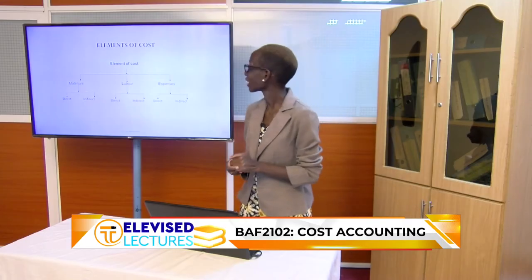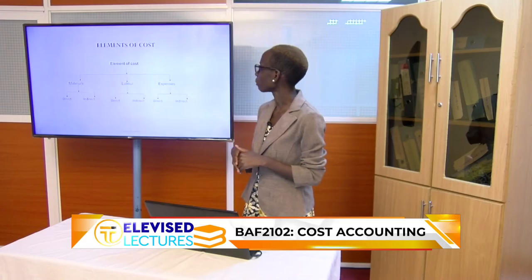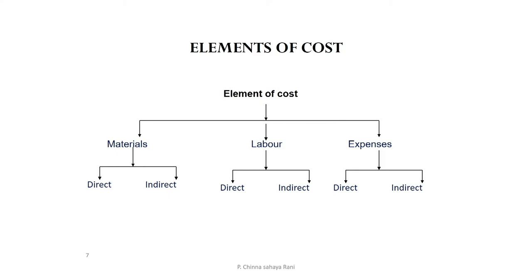The characteristics or elements of costs: when producing a product or service, you'll need material, labor, and there are other expenses you'll incur. The elements of costs are basically material, labor, and expenses. These three are again divided into two — either direct or indirect.